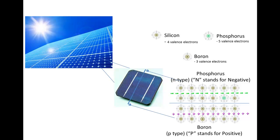The phosphorus creates N-type silicon and the boron creates P-type. The N stands for negative, the P stands for positive.